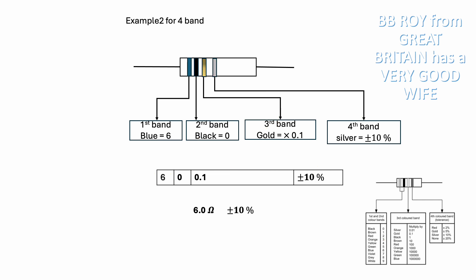Another example: a four-band resistor with bands blue, black, gold, and silver. Blue is 6, black is 0. The third band is gold, which represents 10 to the power minus one (0.1). The fourth band silver represents ±10% tolerance. So the final value is 6.0 ohms ±10% tolerance.